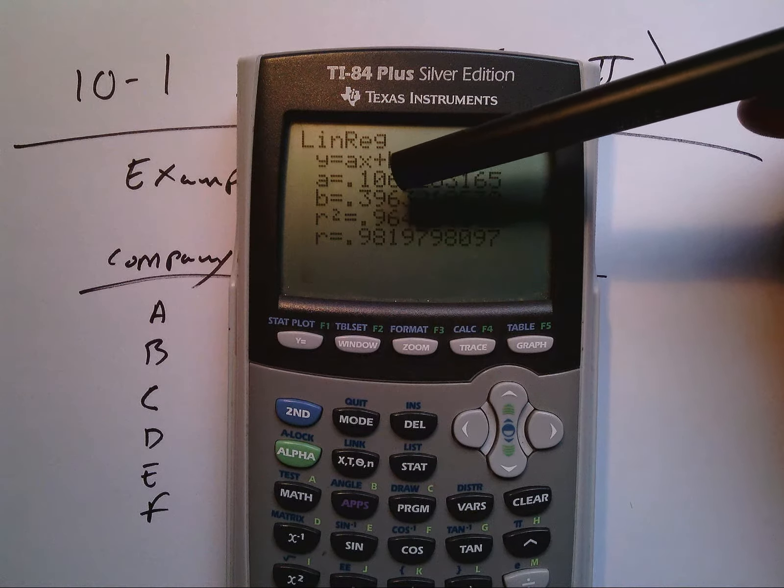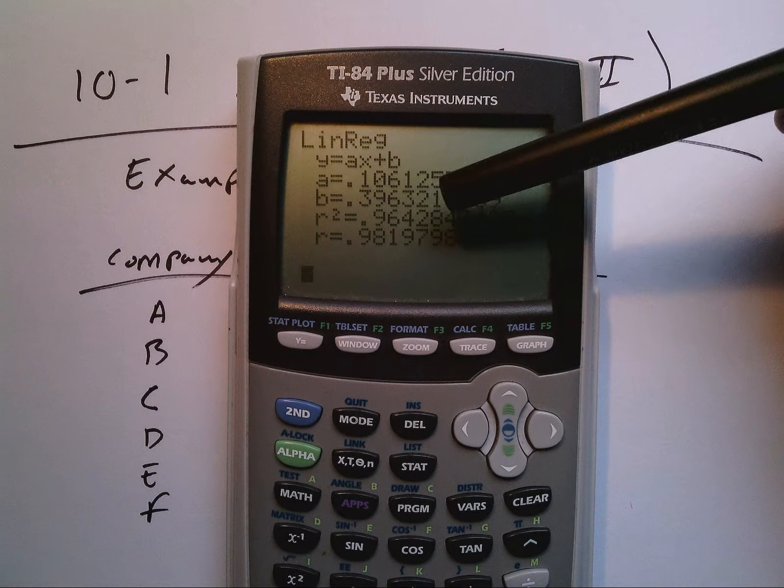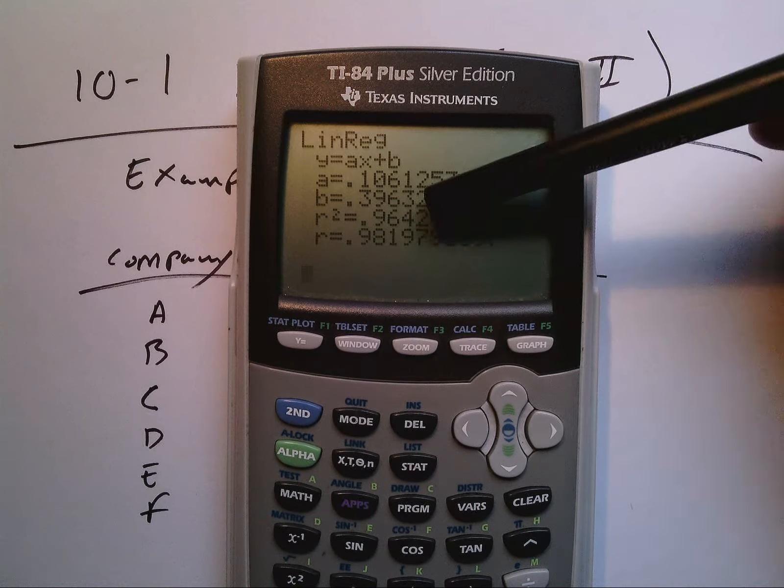My intercept is 0.396. Again, these two pieces of information we are not going to use until 10.2 and 10.3.